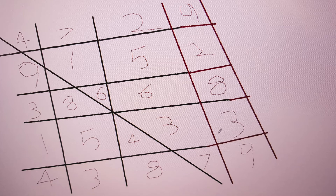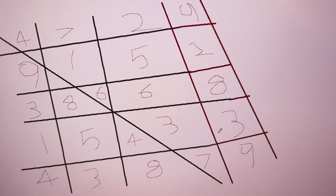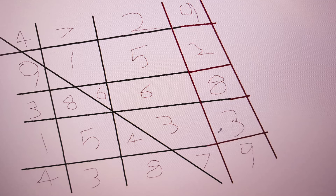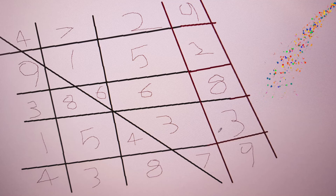And then we have the number 7, which was generated by us. And now we're coming on to the number 8, which was generated by the game, and the number 3, which was generated by the game, and the number 4, which was generated by the game.